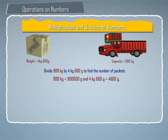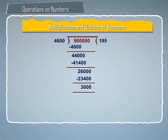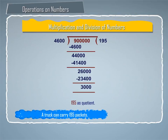Now nine hundred kilogram is equal to nine lakh gram, and four kilogram six hundred gram is equal to four thousand six hundred gram. Dividing nine lakh by four thousand six hundred, as shown on screen, we get one hundred ninety five as the quotient. Therefore, a truck can carry one hundred ninety five packets.